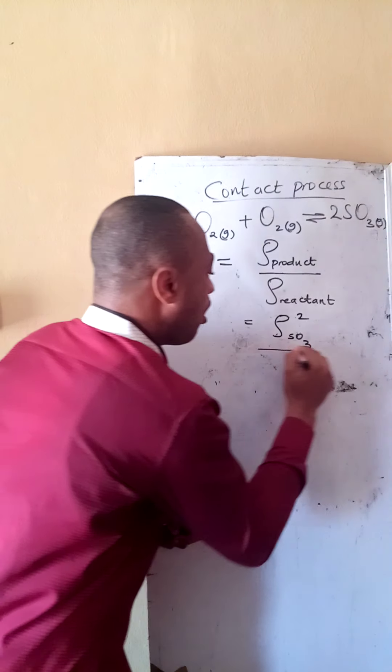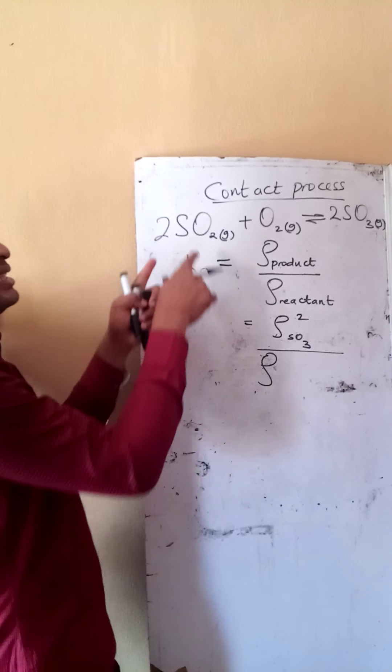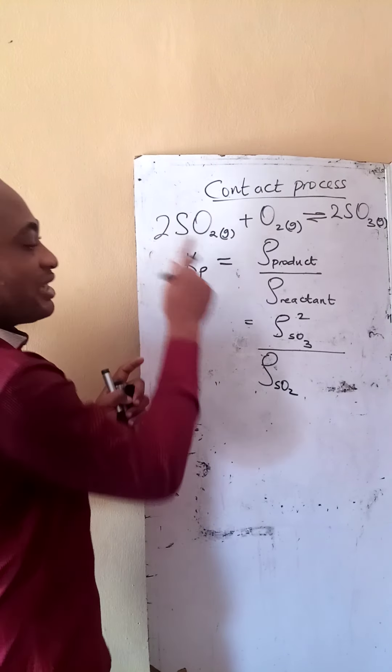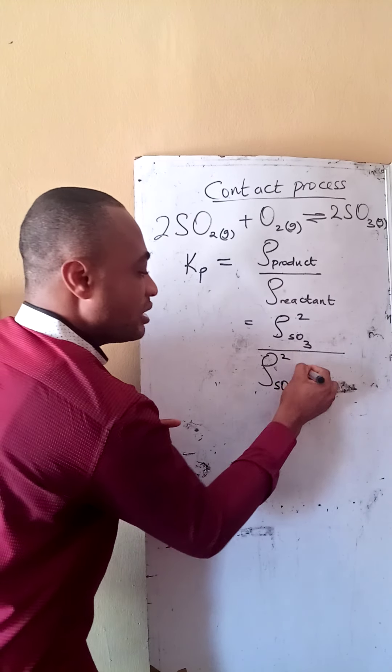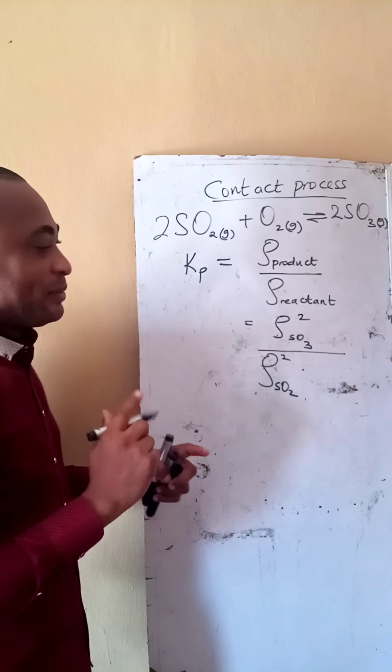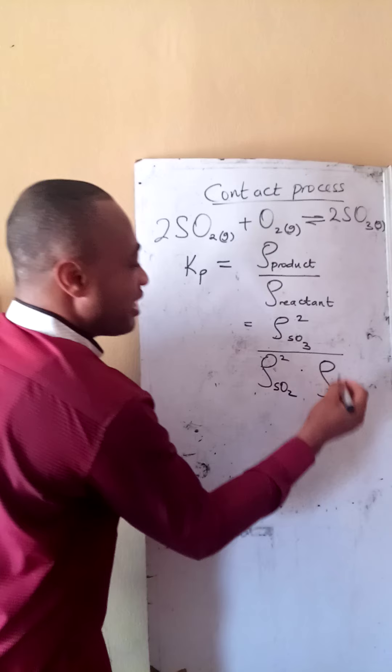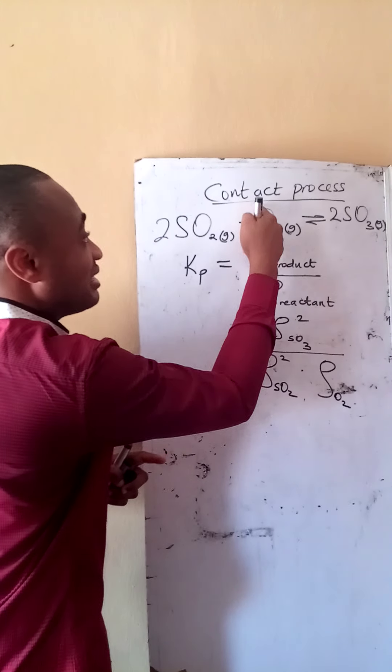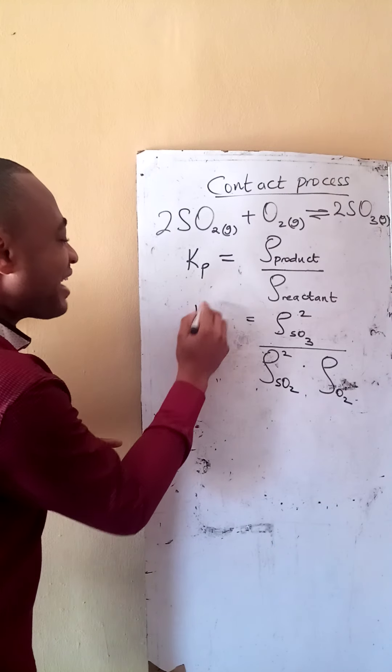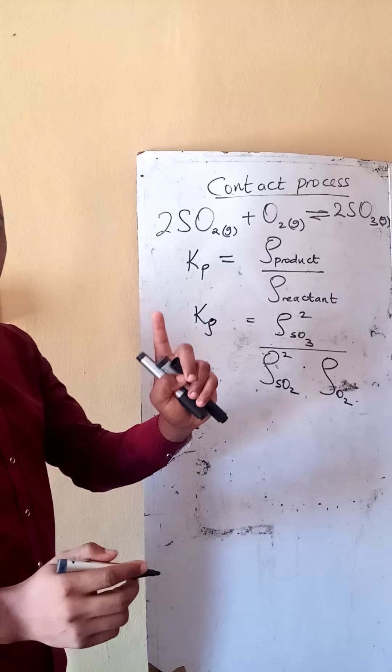Partial pressure of the product is my sulfur trioxide. That will be the partial pressure of sulfur trioxide. It has a coefficient 2, this would be raised to power 2, all divided by the partial pressure of two reactants. One is sulfur four oxide, it has a coefficient 2, this would be raised to power 2 times, remember not addition not subtraction but multiplication, multiplied by the partial pressure of the other reactant oxygen gas. This is my KP for this reaction.